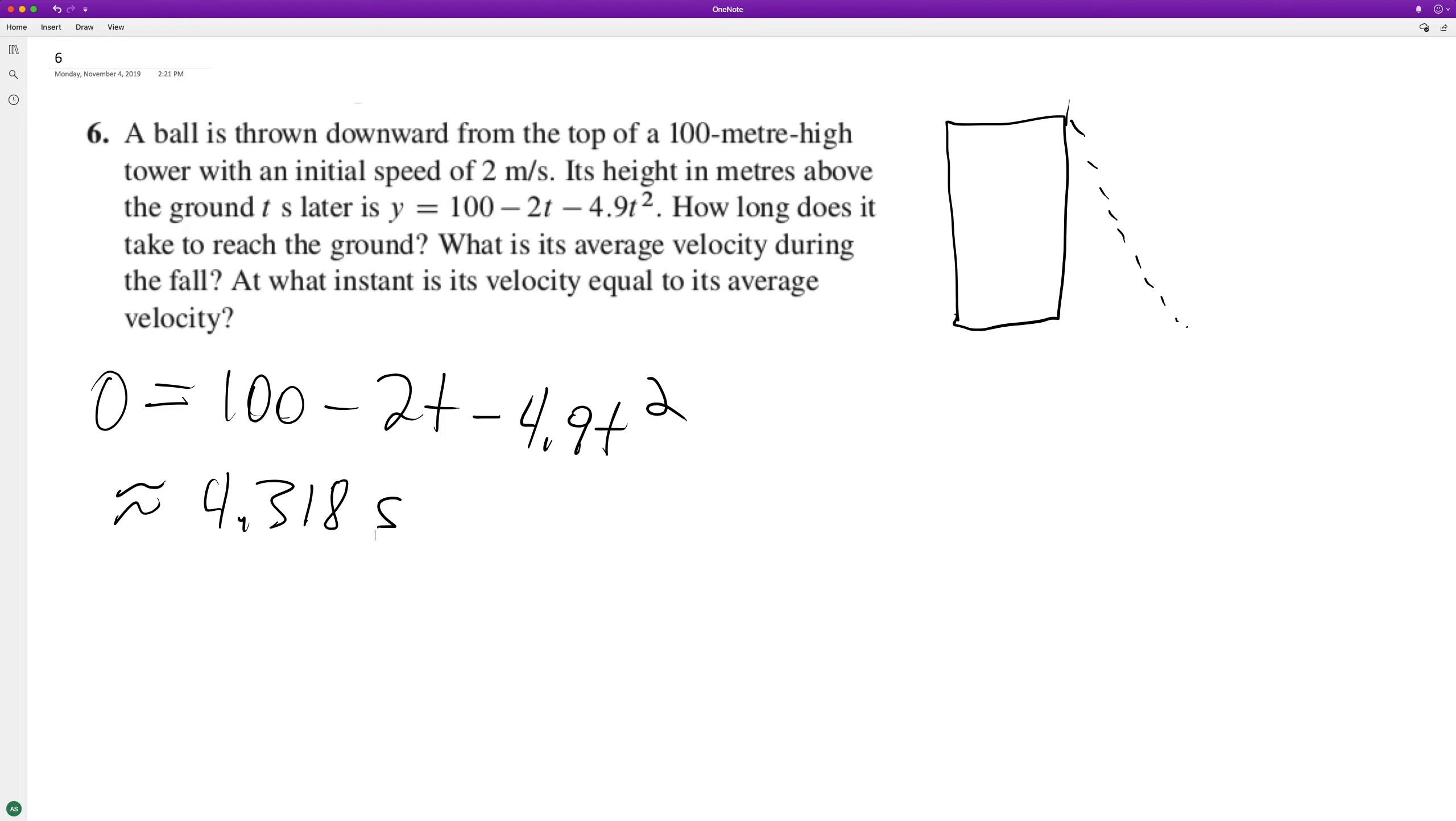What is the average velocity during the fall? To find that, we traveled 100 meters divided by 4.318 seconds, which is approximately negative 23.2 meters per second.